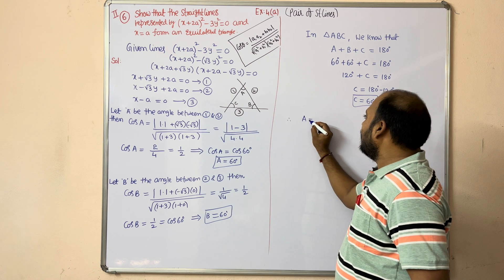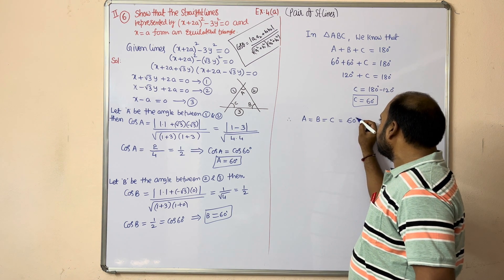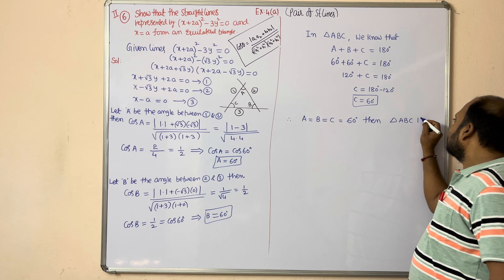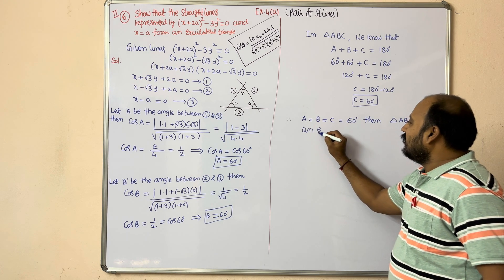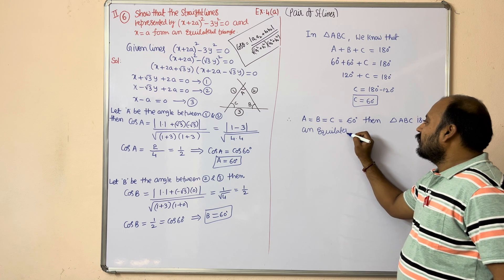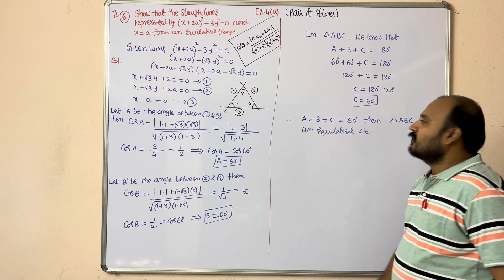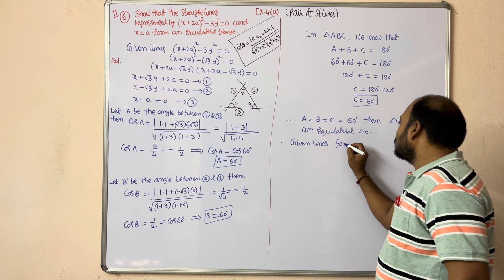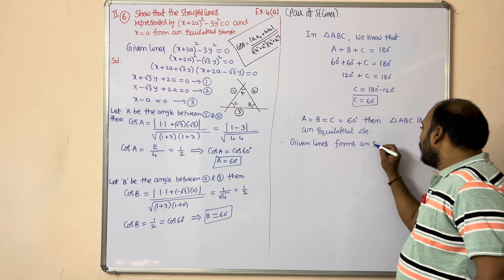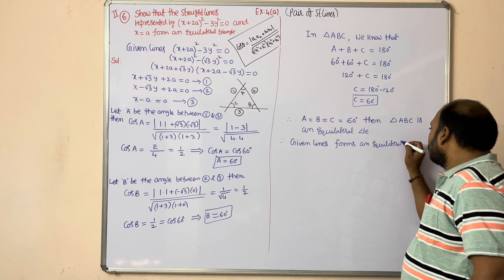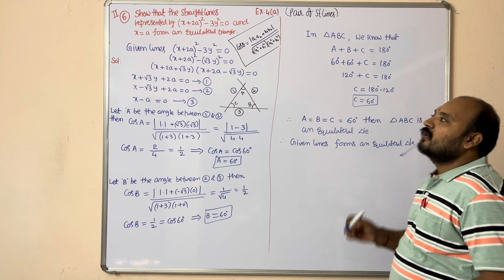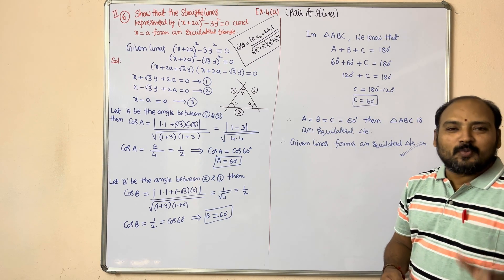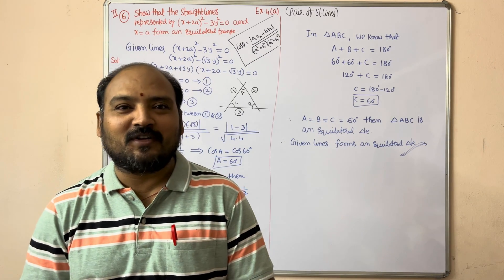By observation, angle A = angle B = angle C = 60°. Therefore, triangle ABC is an equilateral triangle. Hence, the given lines form an equilateral triangle — which is what we were asked to prove. I hope you understand, dear students. Thank you all for watching our channel.